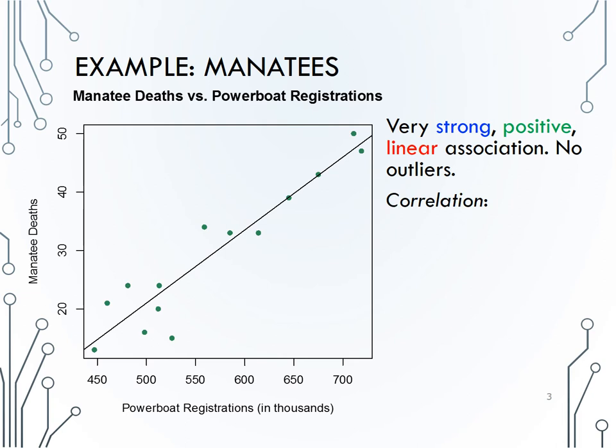Well, since the relationship is strong, positive, and linear, you should have guessed a correlation coefficient near 1. The calculated correlation coefficient is .943. We will not ask you to calculate correlation coefficient, but we could ask you to estimate it, in which case, a number near 1 would have been the correct answer.